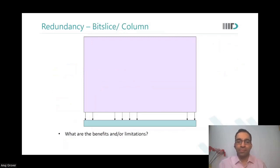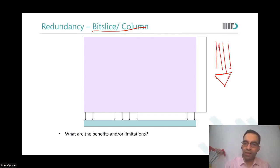So what you would want to do is use bit-slice or column redundancy. I would not say column, I would rather say bit-slice or a set of columns which share a sense amplifier. So what happens when you do this? Let's say a particular cell is failing.